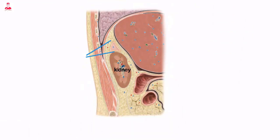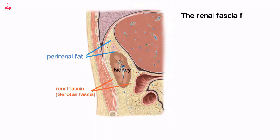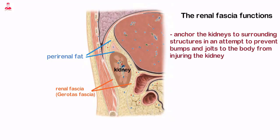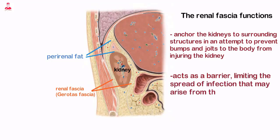Surrounding the kidneys and perirenal fat is another protective layer called the renal fascia. The renal fascia functions to anchor the kidneys to surrounding structures in an attempt to prevent bumps and jolts to the body from injuring the kidneys. In addition, the renal fascia acts as a barrier, limiting the spread of infection that may arise from the kidneys.